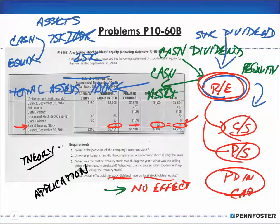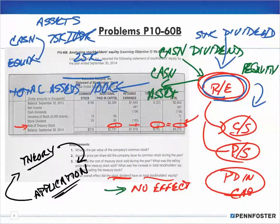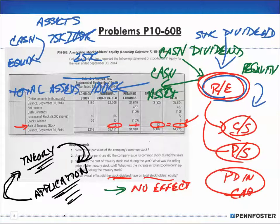It's a circular process: you start by reading the theory, but you might not fully understand it, so you do some application and theory begins to fall into place. Then you reread the theory, do more problems, and your understanding deepens. Eventually you understand the theory fully and can apply it in any situation. If you're still struggling, contact an instructor. We'll see you in the next set of videos for chapter 11.